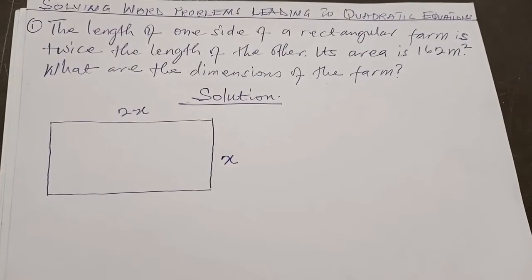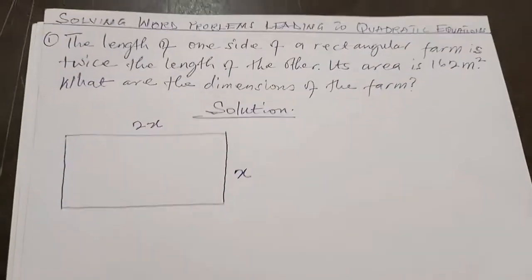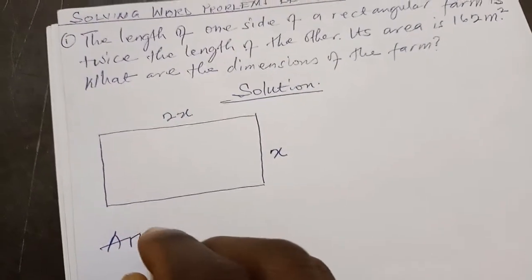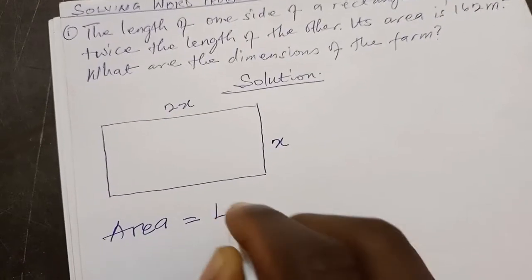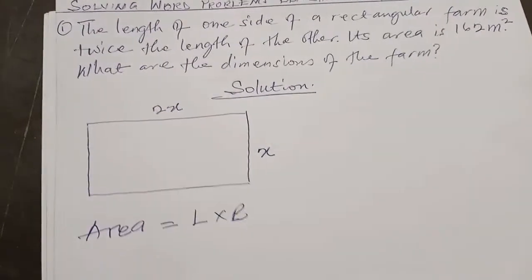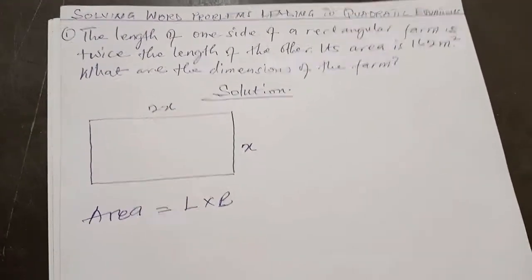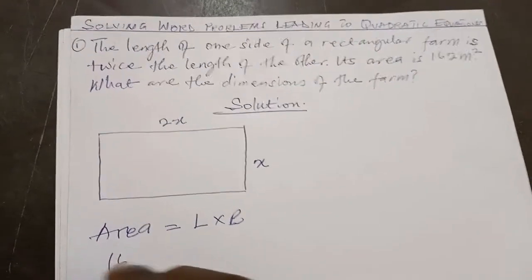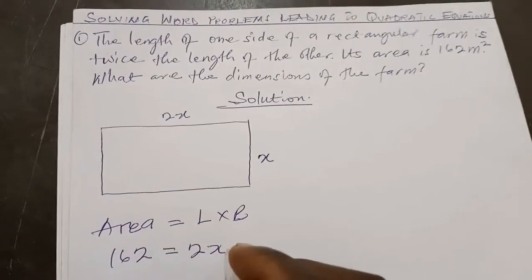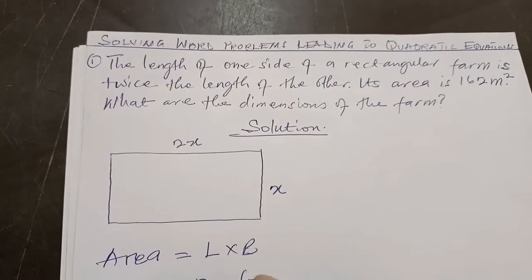The question says the area is 162 square meters. We just have to use the formula for the area of a rectangle, which is length times breadth or length times width. The shorter side is either called width or breadth. If they give us the area, we are just going to fix this information into it and solve. The area is 162, the length (longer side) is 2X, and the shorter side is X, so they will be multiplying.